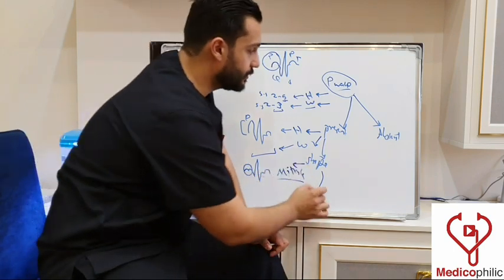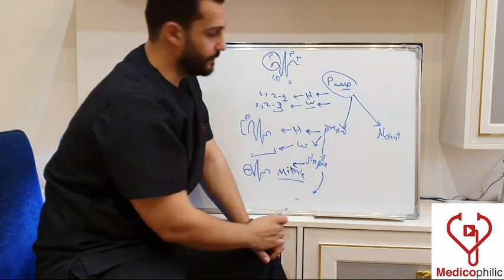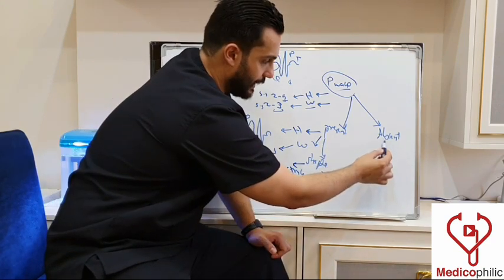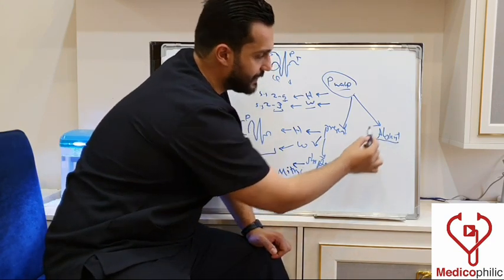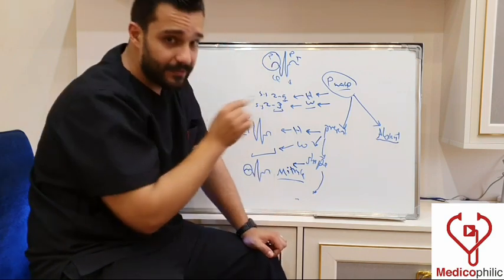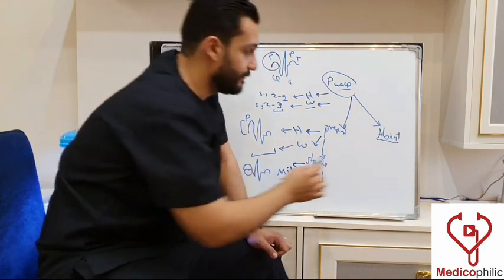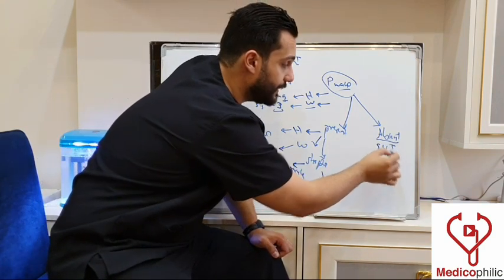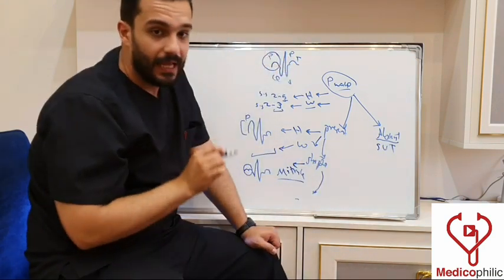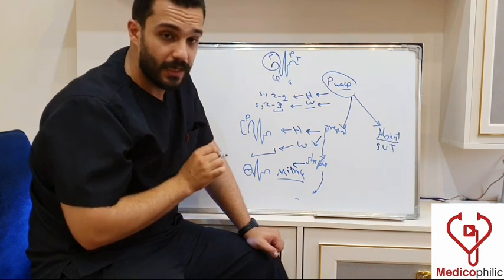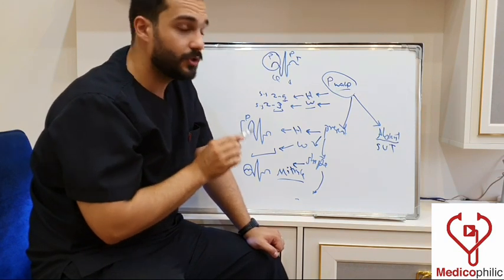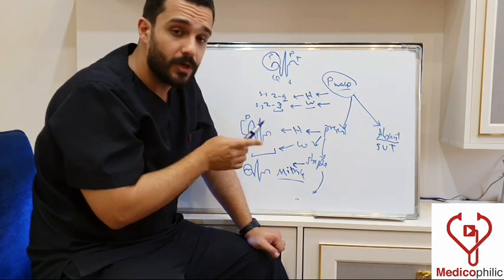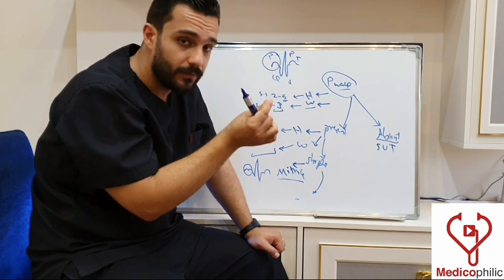Moving to the absence of the P wave: the first abnormality may be due to SVT — supraventricular tachycardia — where there is no P wave and the QRS complex is narrow.